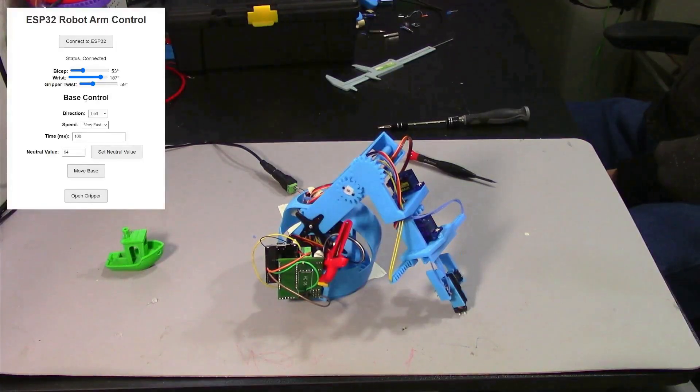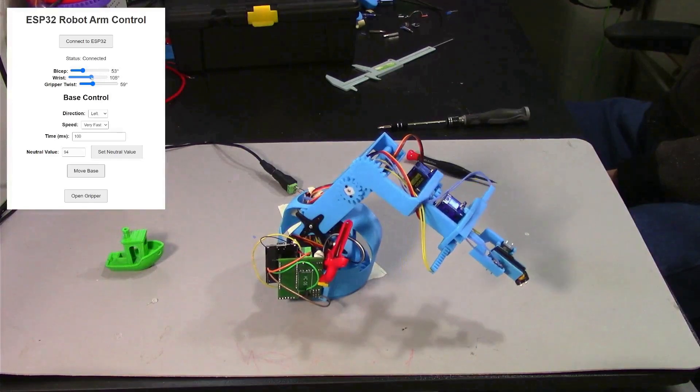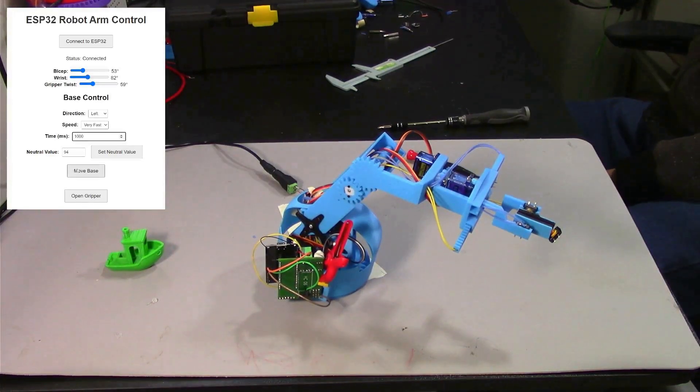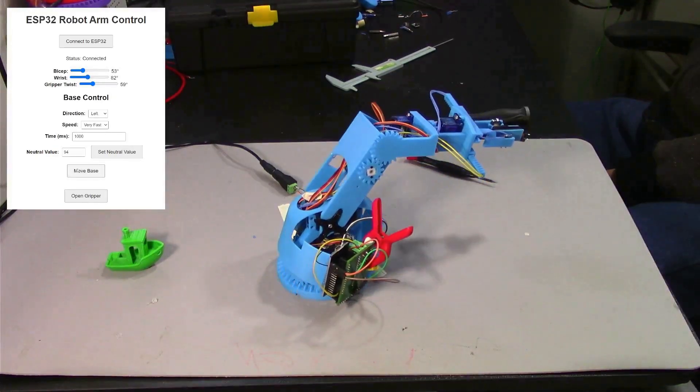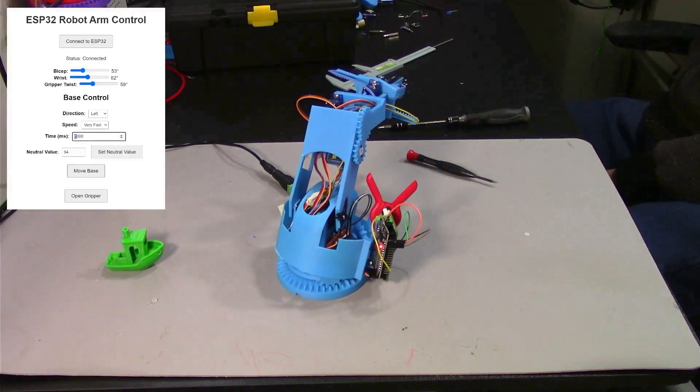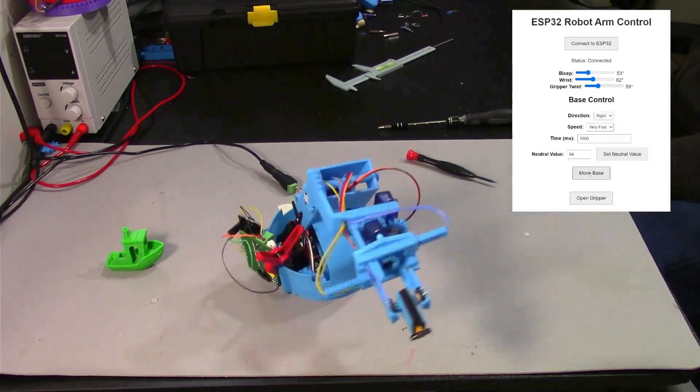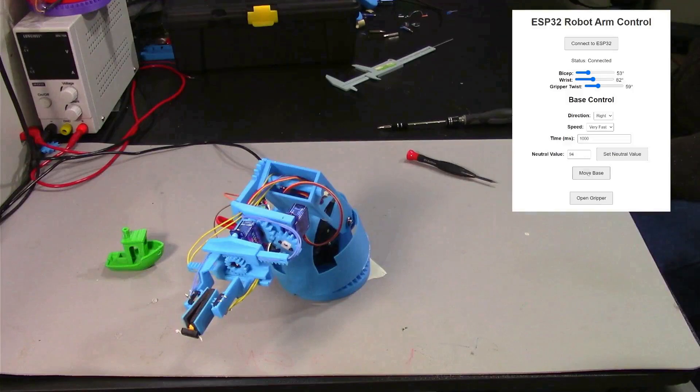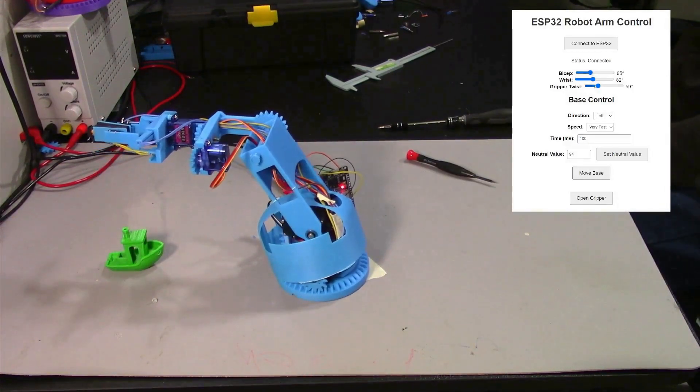So we're on our way to having a more organized project. One of the flaws of a 360 degree continuous servo is it doesn't really understand what position it's in. It only runs for a certain amount of time at a certain speed. This actually makes the code kind of complicated for controlling the base on how it spins around.